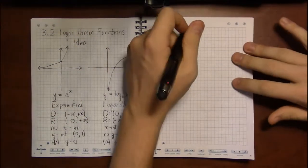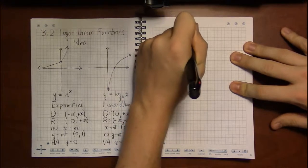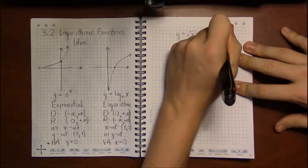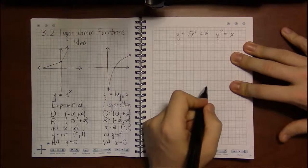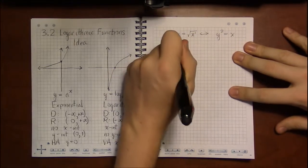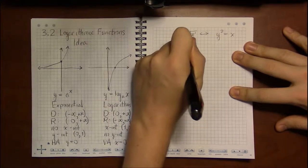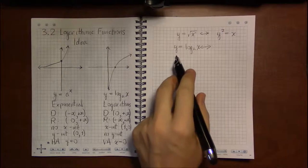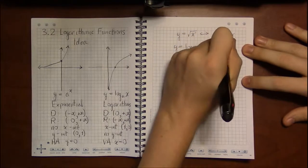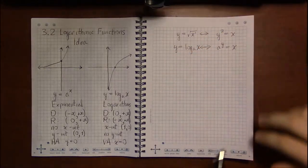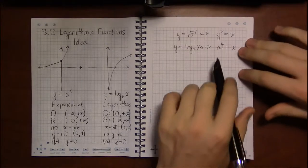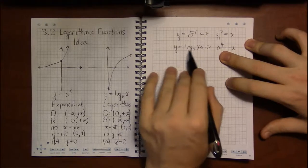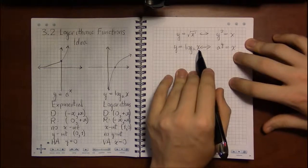So, just like when we say if y is the square root of x, what we really mean is that y is some number that when you square it, you get x. The same thing is true for logarithms. When we say that y equals log base a of x, what we mean is that a to the y is equal to x. So, if you notice, what's happened here is we've flipped around a and y, and left x on the right as the rightmost variable.